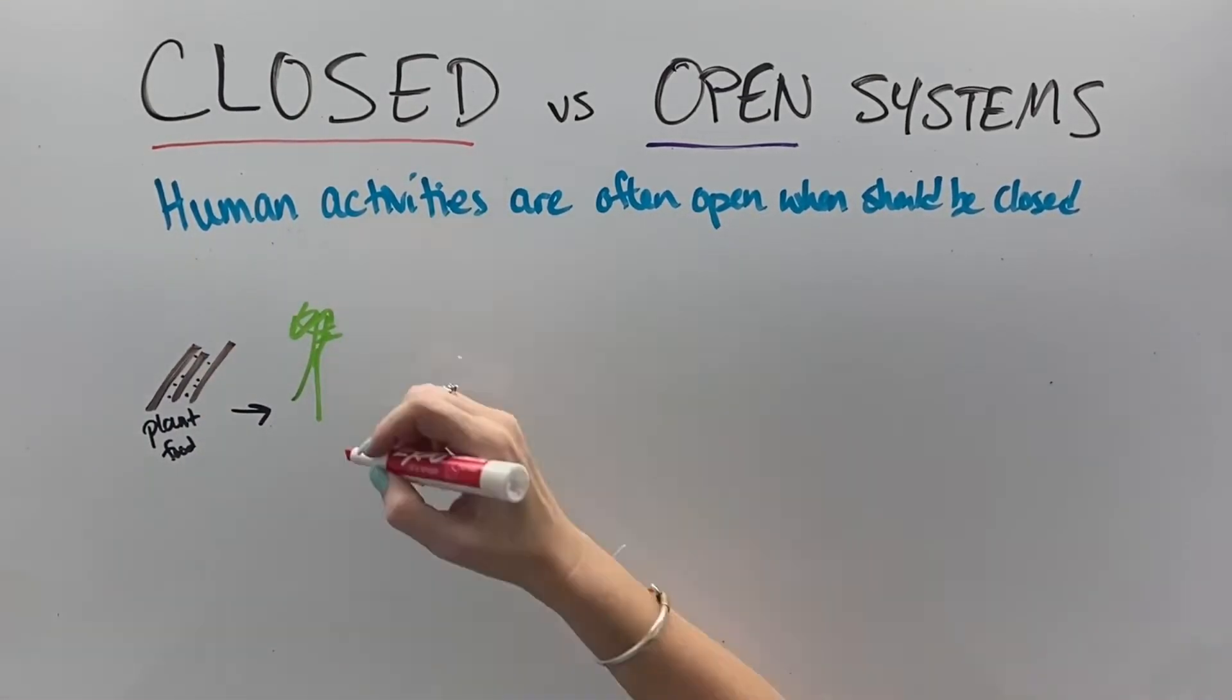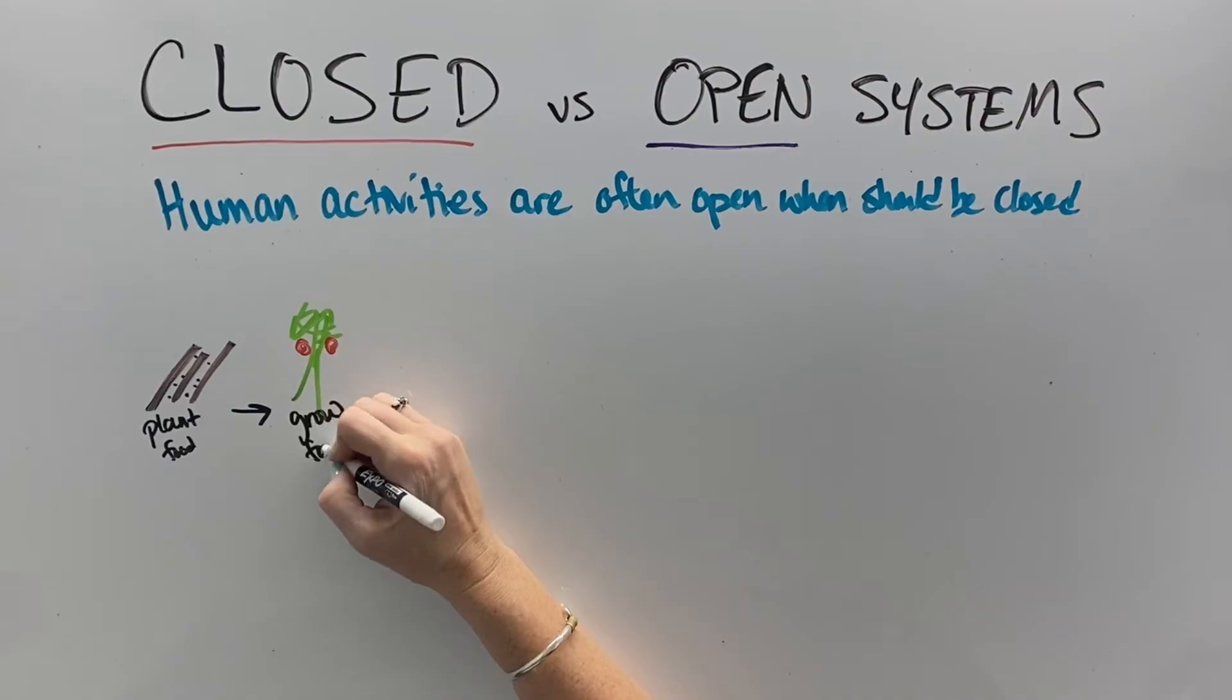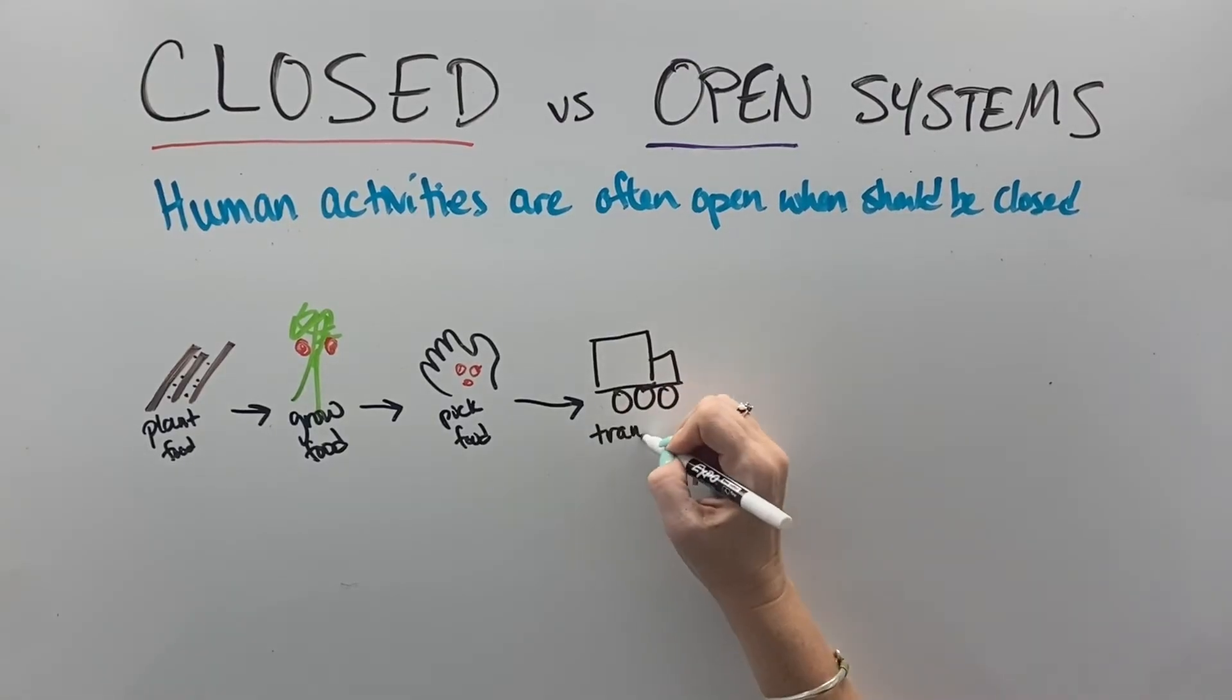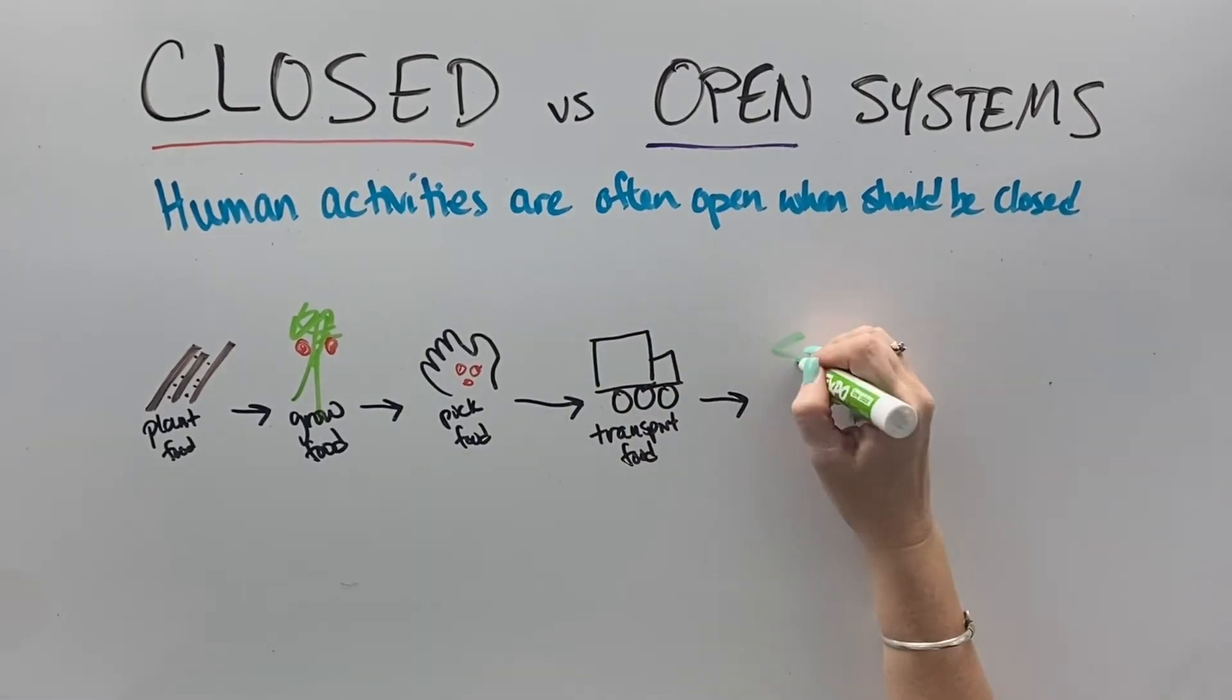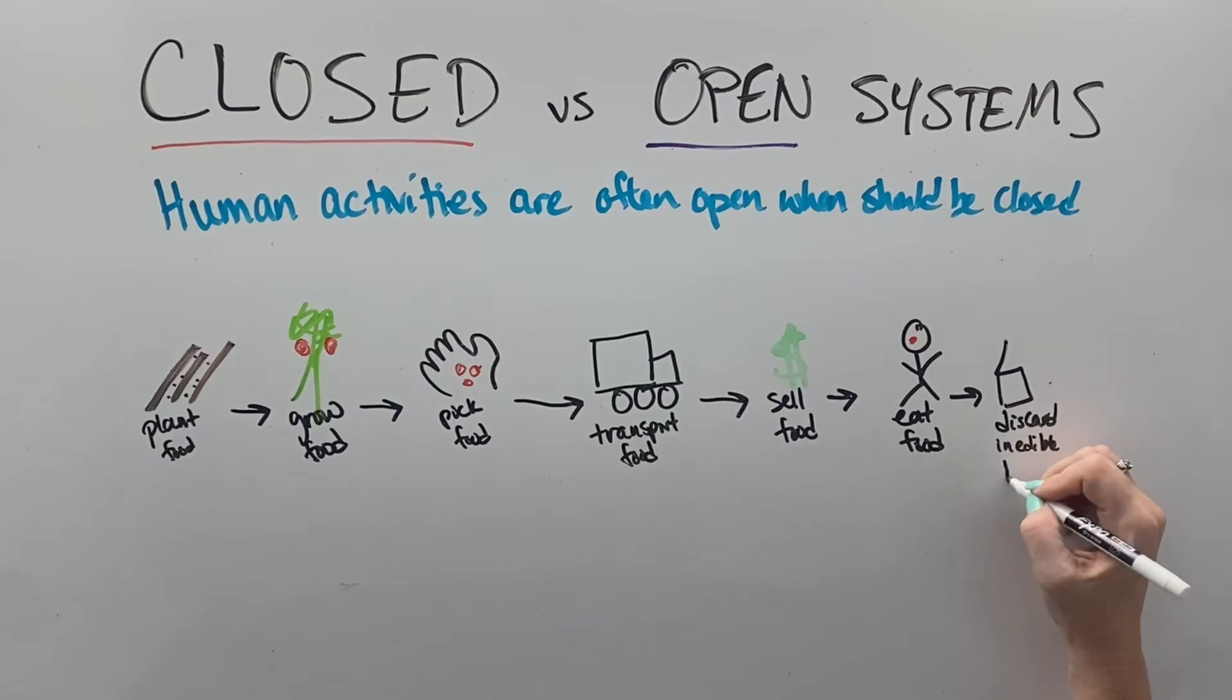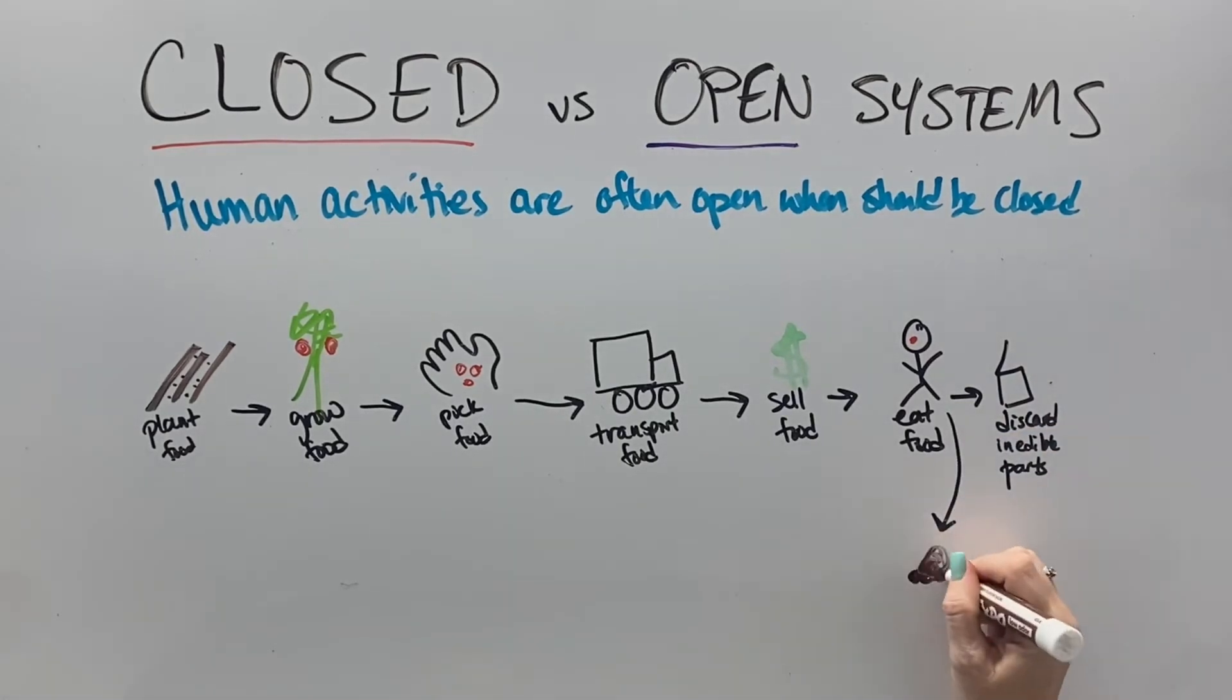So one of the problems that we have on our planet is that things that should be closed, our matter systems should be closed, often are not. Like we plant seeds and we grow food and then we pick the food and then we transport the food and then we sell the food and then we take the food back to our house. And we eat the food and then we throw away all of the inedible parts of the food and we poo our waste and flush it down the toilet. And then these two things go into landfills completely separate from the source that it came back to.